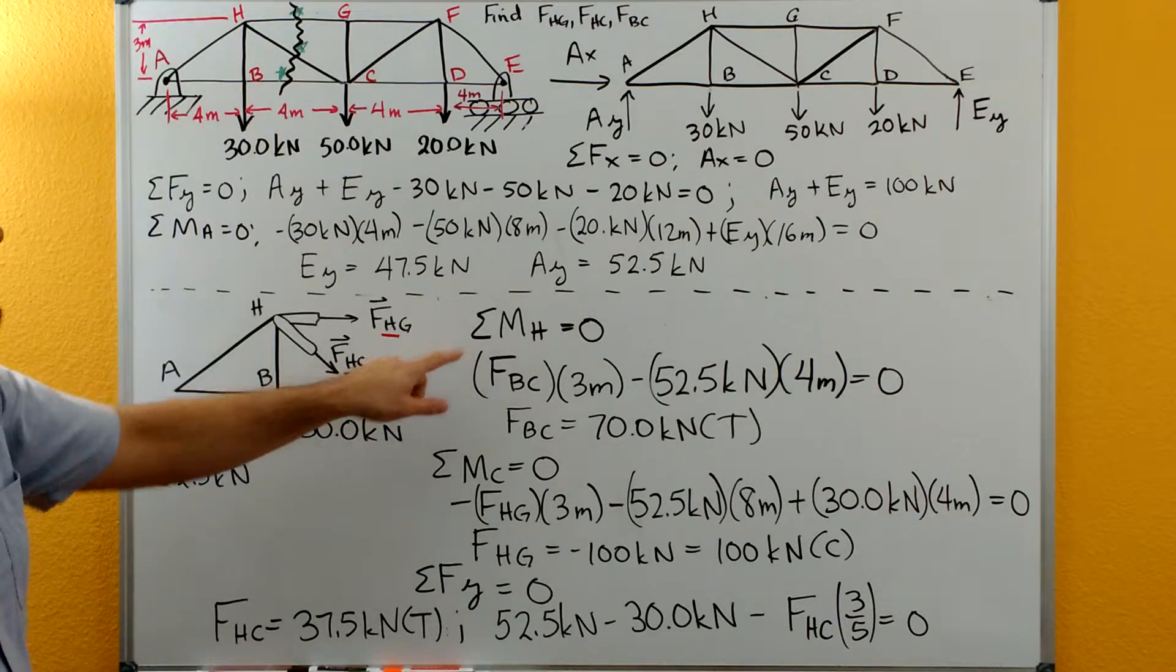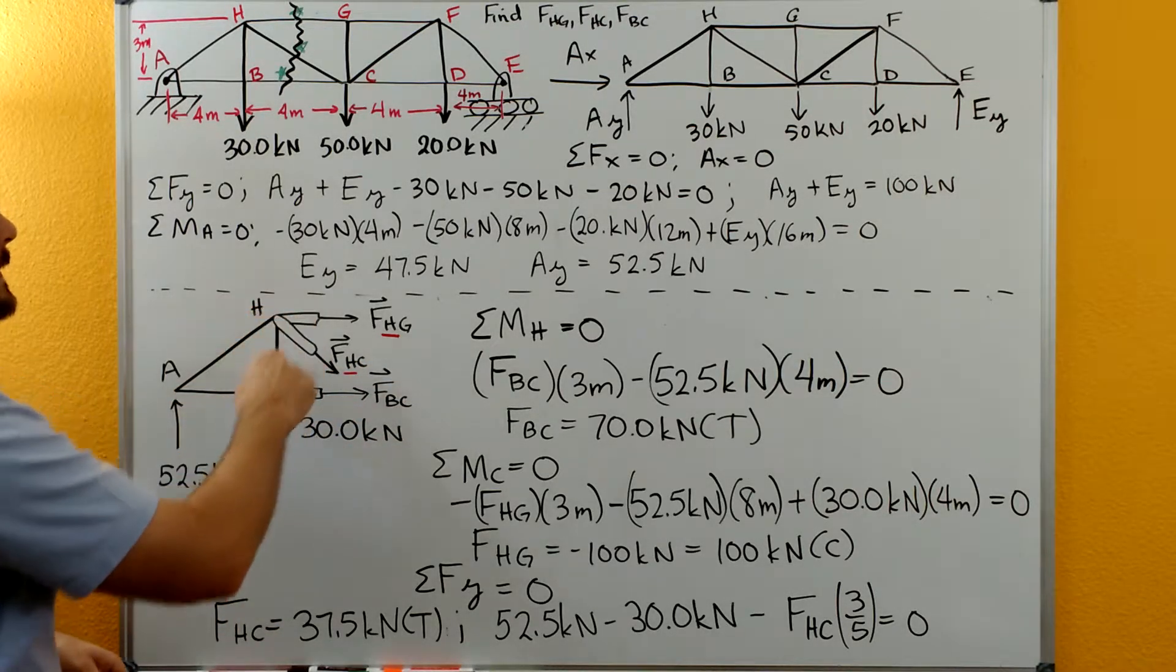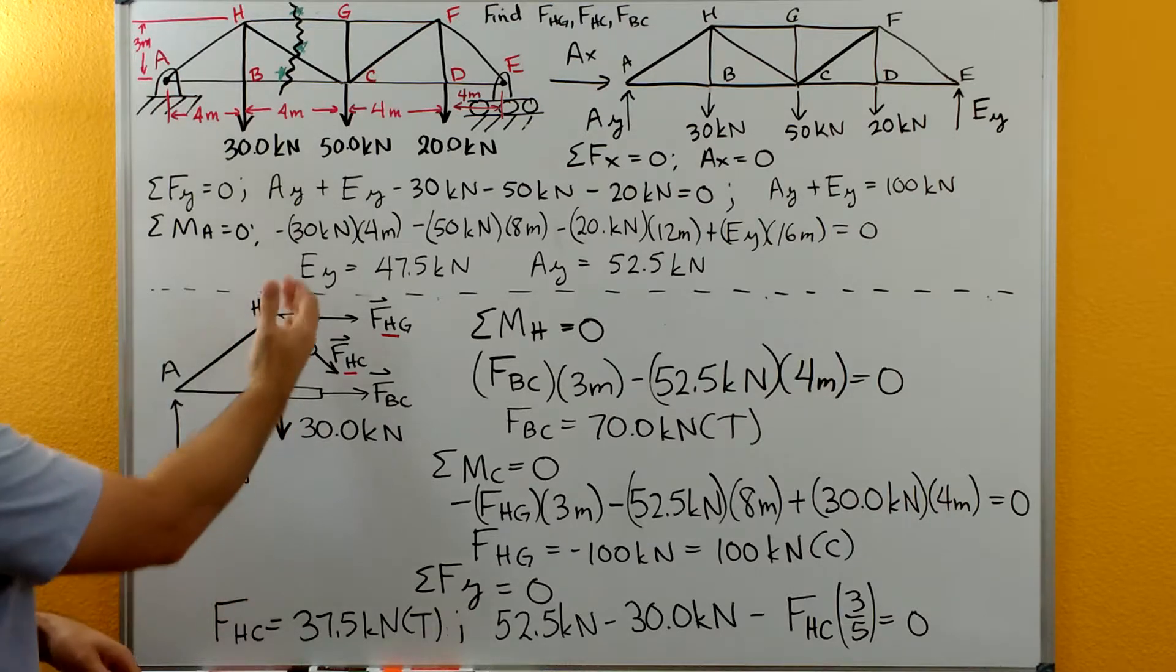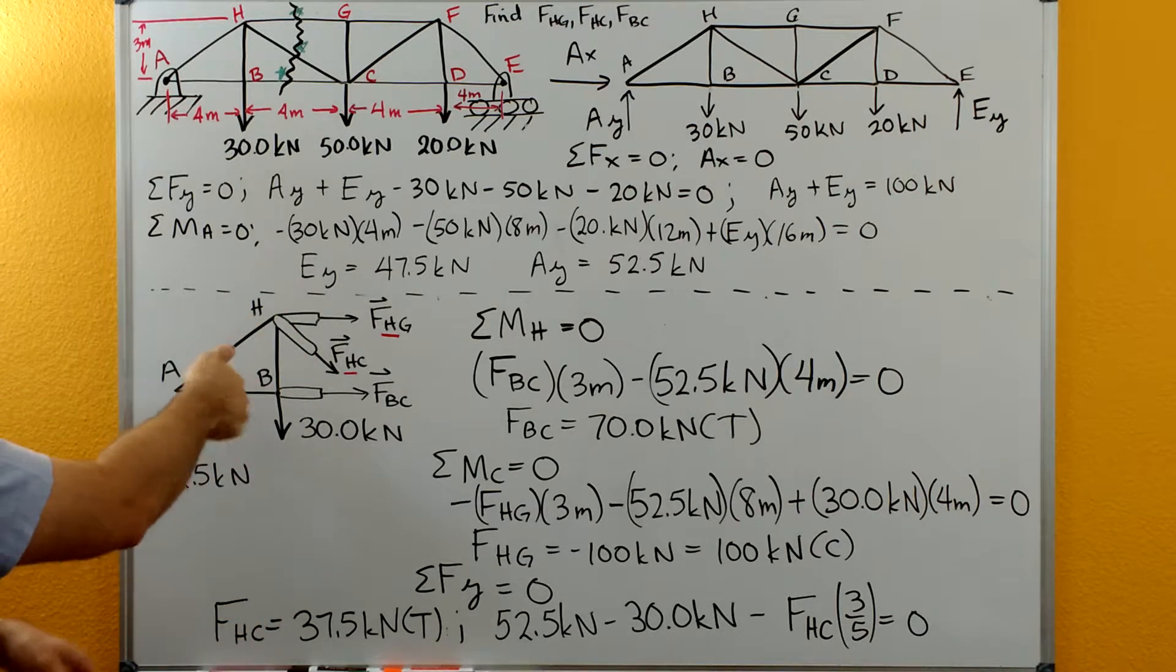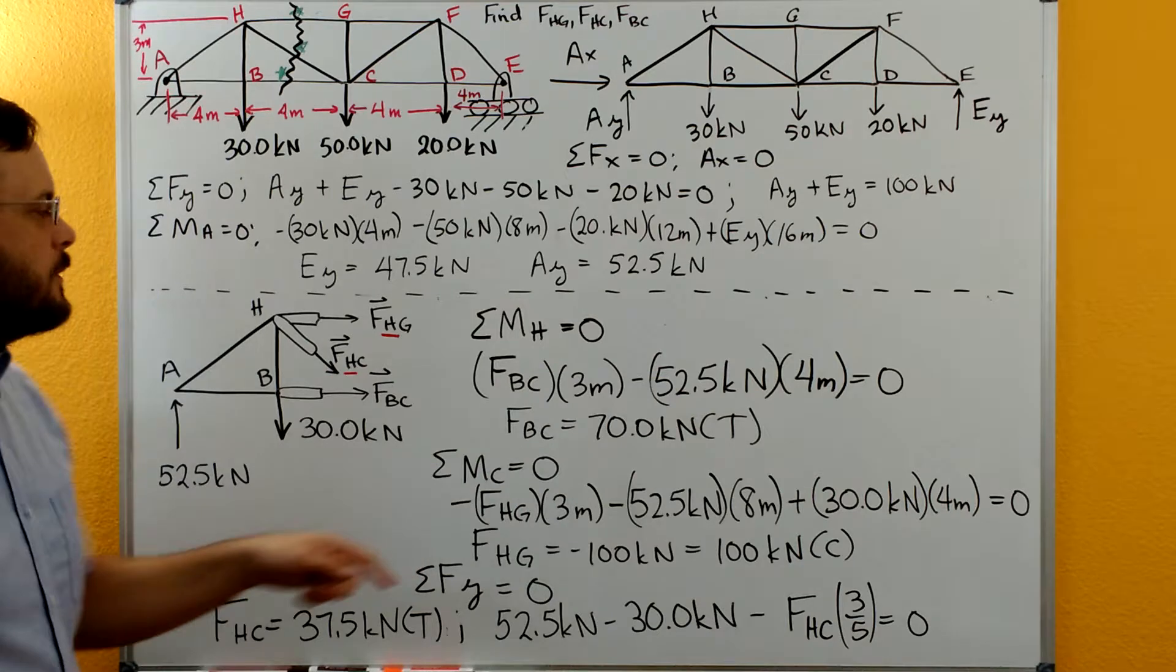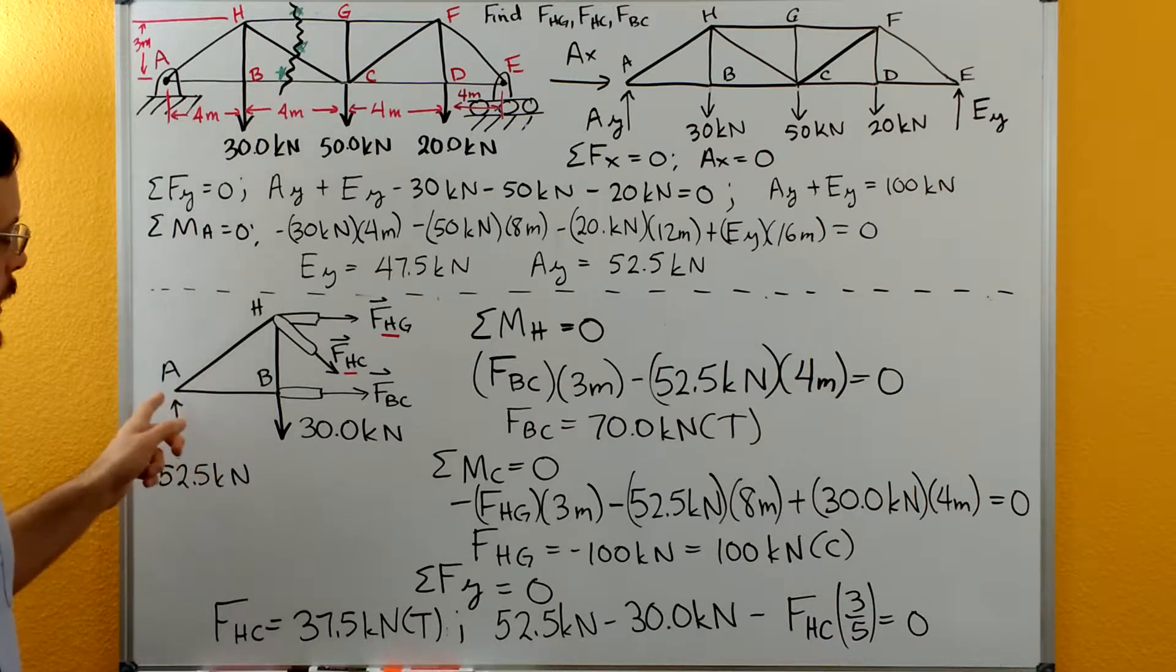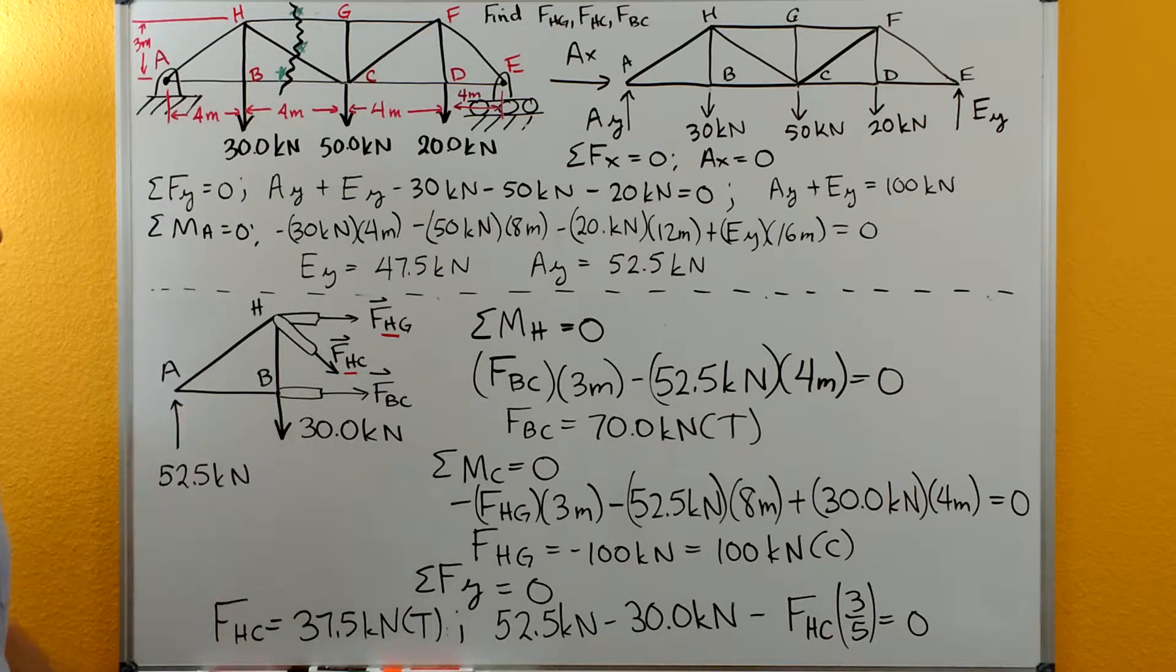A sum of moments about H gives us FBC times the height of 3 meters as a positive moment, minus 52.5 times the horizontal distance of 4 meters.